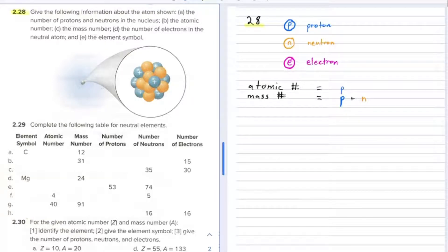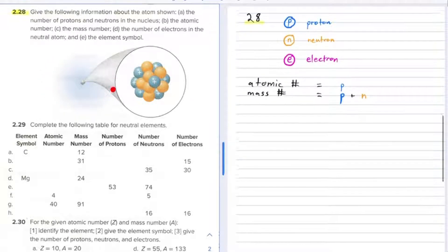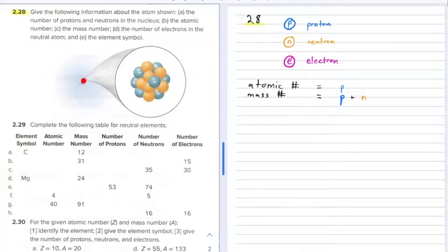Number 28 says give the following information about the atom shown. It's actually showing the nucleus. This blue cloud is the electron cloud, but it's kind of zooming in on the nucleus.